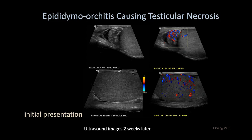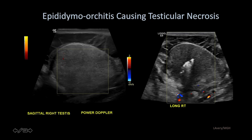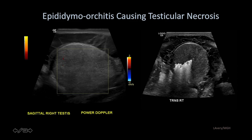Here's a case of very dramatic epididymal orchitis causing testicular necrosis. We see a classic appearance of a very enlarged, heterogeneous epididymis with increased vascular flow. The patient was treated but returned two weeks later with a large heterogeneous pyocele and hydrocele with a net-like appearance, enlargement, and very heterogeneous echo texture of the testicle. On Doppler flow, there was no flow even on power Doppler. Echogenic material with dirty shadowing consistent with air within the necrosed testicle was seen. Testicular necrosis can occur from severe epididymal orchitis.